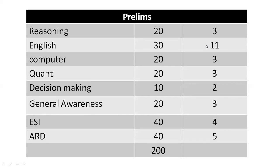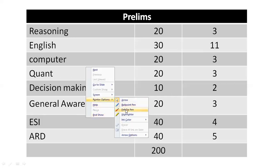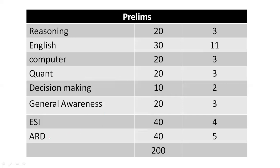We will begin with the prelims examination. In prelims, you have to face around 200 questions, and out of those 200 questions, only 100 questions form the merit sections — General Awareness, Economic and Social Issues, and Agriculture and Rural Development. There will be 20 questions from General Awareness, 40 from ESI, and 40 from ARD. Marks scored in these 100 questions will only form the merit.